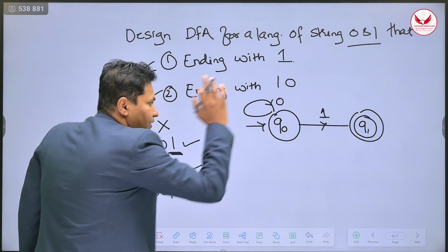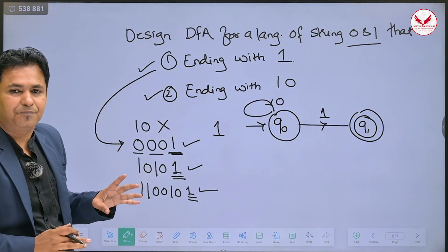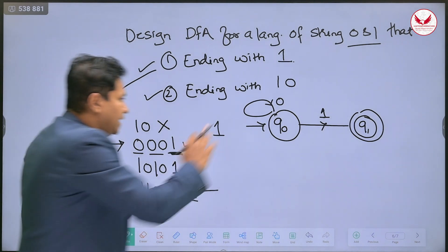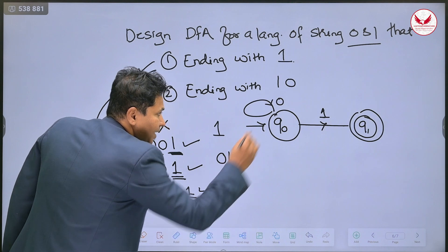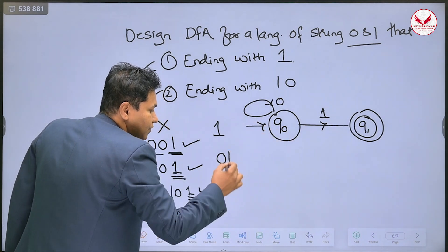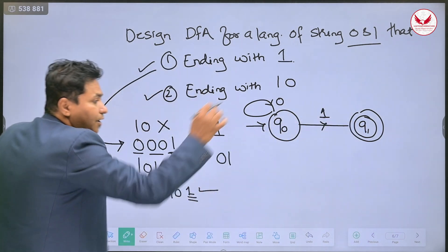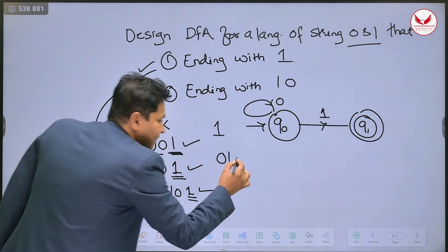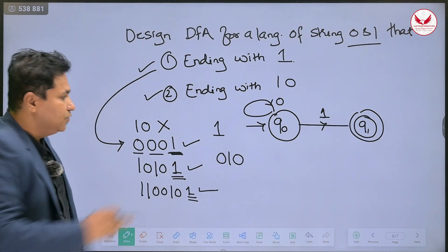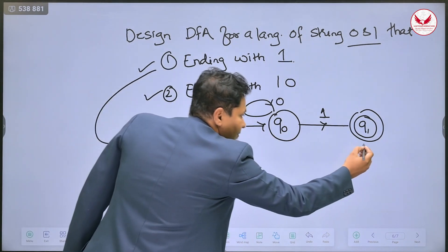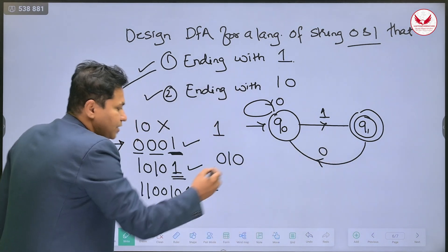So in q0 state, by processing 0 you remain in the same state, that is q0. Next, consider the input 0, 1 — by processing 0 I remain in q0 state, and by processing 1 in q0 state I will reach to q1 state. In q1 state, if the next symbol is 0, the machine should not enter into the final state. So by processing 0 it will return back to q0 state.